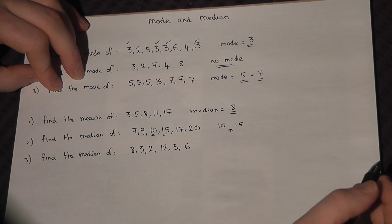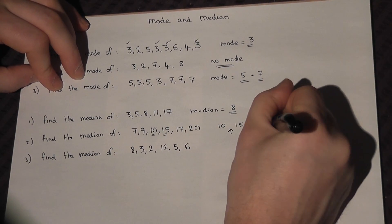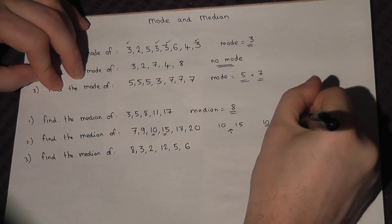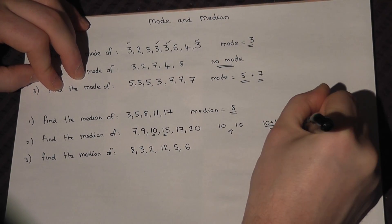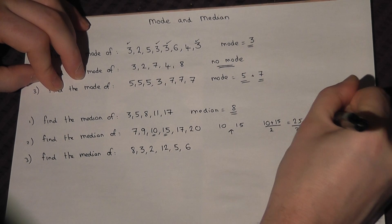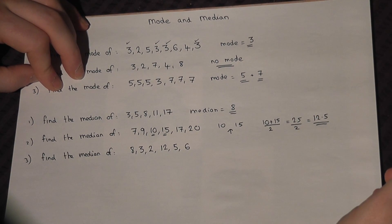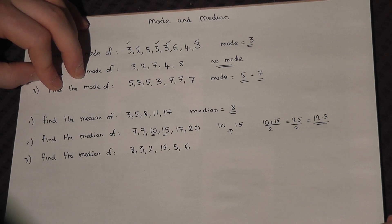Now to find this, you do 10 plus 15, and then halve it. So 25 over 2, which is 12.5. So the median is 12.5.